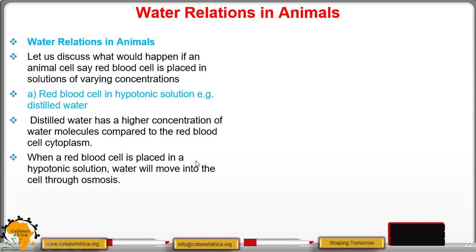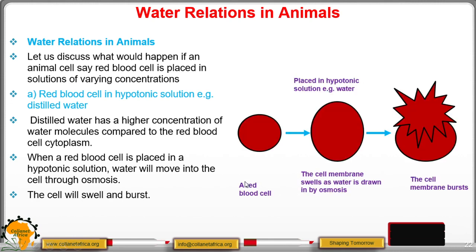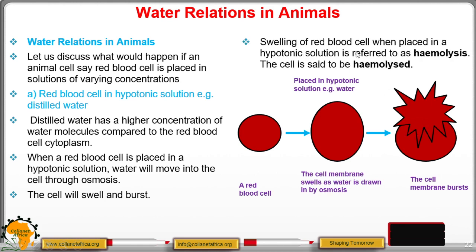So when the red blood cell is placed in a hypotonic solution, water will move into the cell through osmosis. The cell will swell and finally burst open. Initially it was this size, then when placed in distilled water or a hypotonic solution, it gains water by osmosis and eventually it bursts.